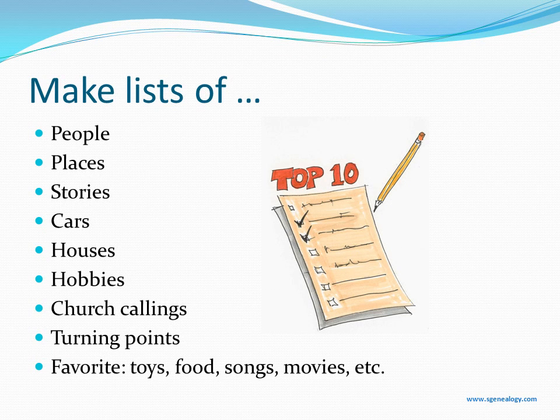Now I'm going to talk about some ways to add interest to your history writing. One of the things to do is to make lists — this helps you think of all the different aspects of life you want to write about. You can make lists of people, places, stories you want to include, cars, houses, hobbies, church callings, and turning points. Turning points are a great thing to include in your history.